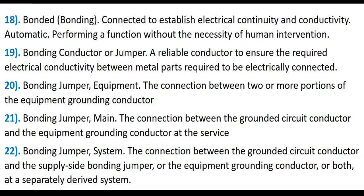18. Bonded/Bonding: Connected to establish electrical continuity and conductivity. 19. Bonding Conductor: A reliable conductor to ensure the required electrical conductivity between metal parts required to be electrically connected. 20. Bonding Jumper Equipment: The connection between two or more portions of the equipment grounding conductor. 21. Bonding Jumper: The connection between the grounded circuit conductor and the equipment grounding conductor at the service. 22. Bonding Jumper: The connection between the grounded circuit conductor and the supply-side bonding jumper, or the equipment grounding conductor, or both, at a separately derived system.